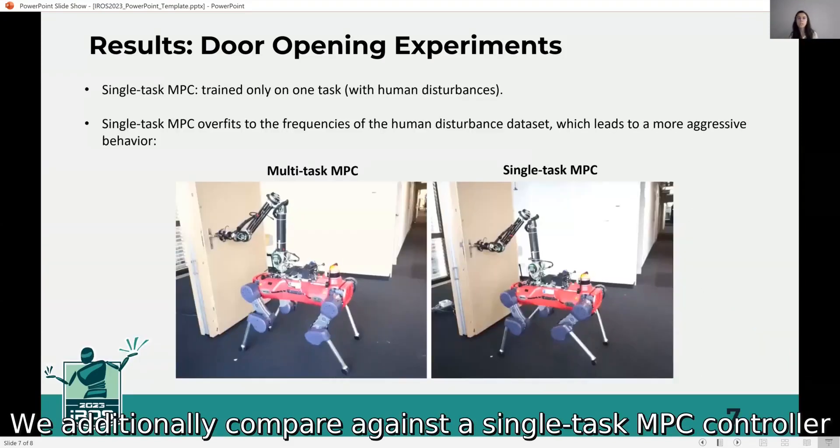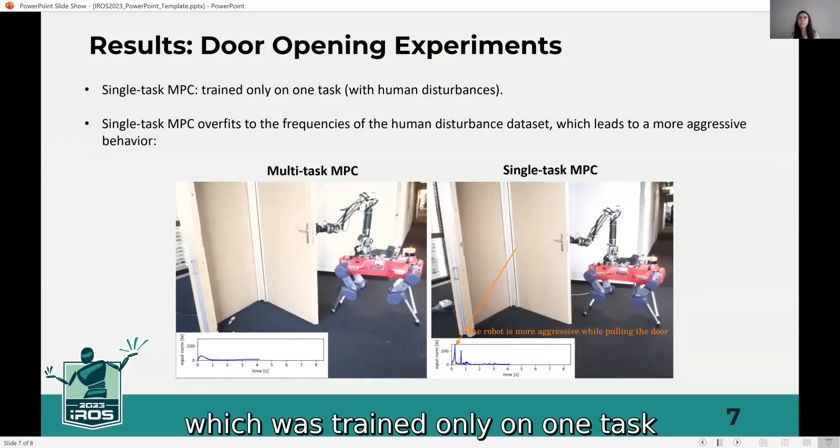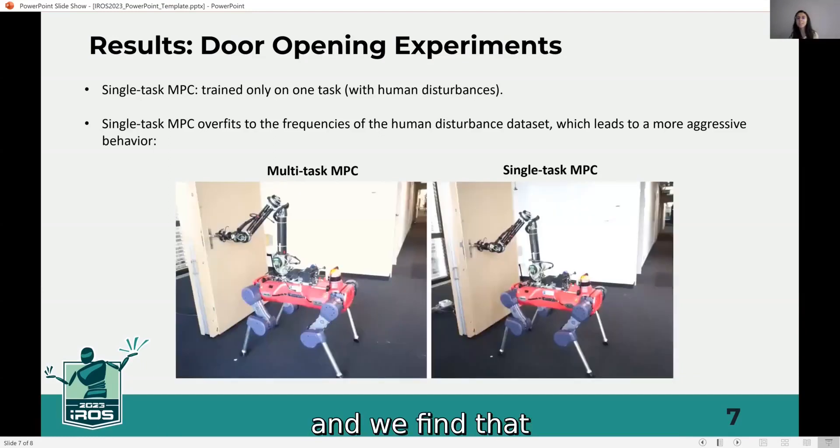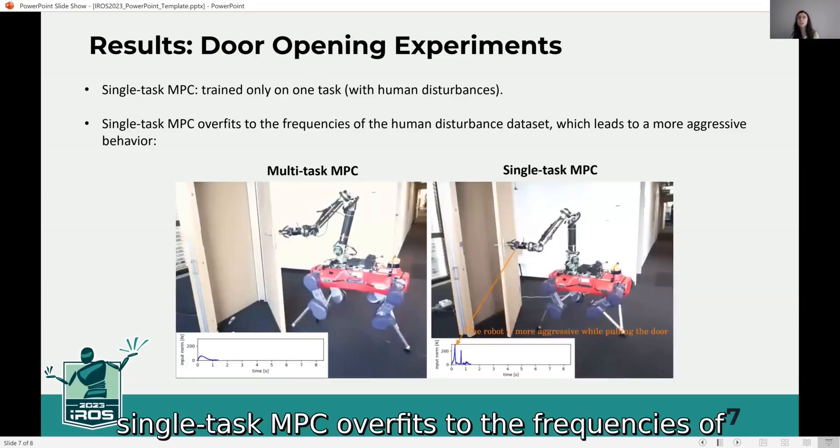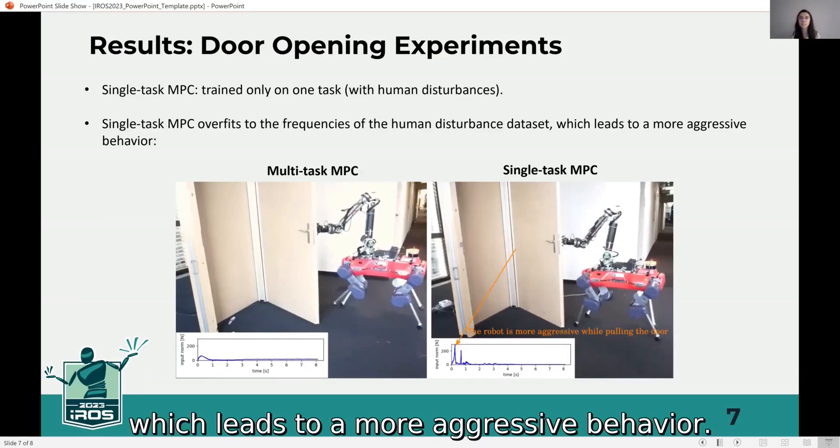We additionally compare against a single-task MPC controller, which was trained only on one task characterized by human disturbances, and we find that the single-task MPC overfits to the frequencies of the human disturbance dataset, which leads to a more aggressive behavior.